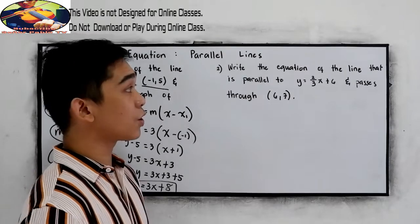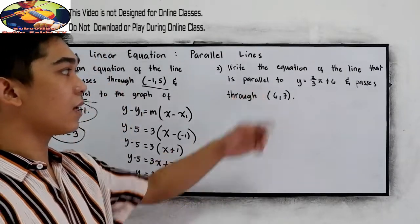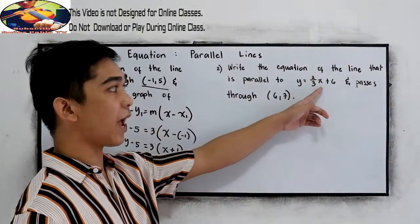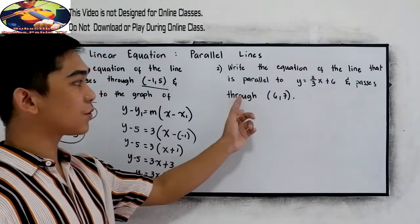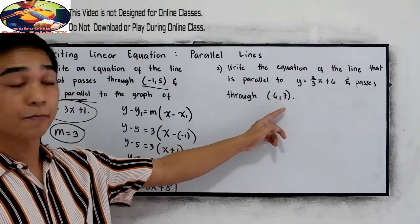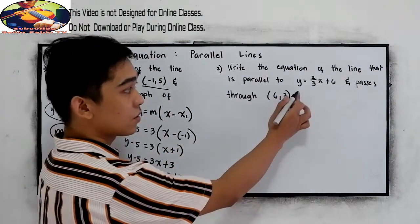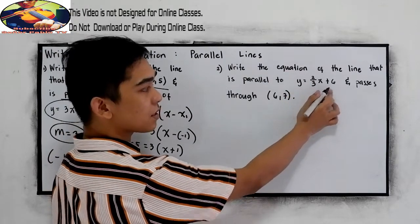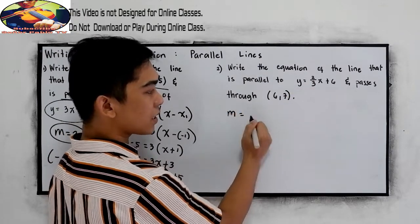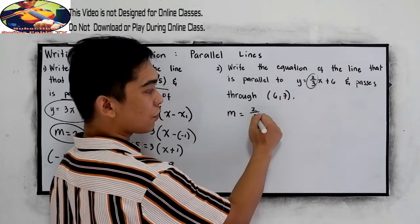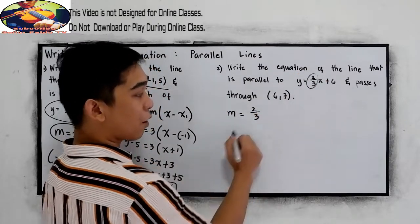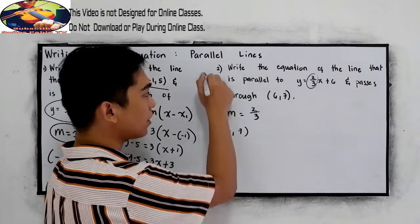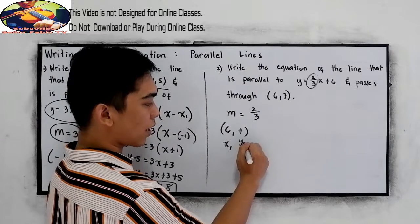Write the equation of the line that is parallel to y is equal to 2 over 3x plus 6 and passes through 6 comma 7. So our m is 2 over 3, and our point is 6 comma 7, which are x sub 1 and y sub 1.